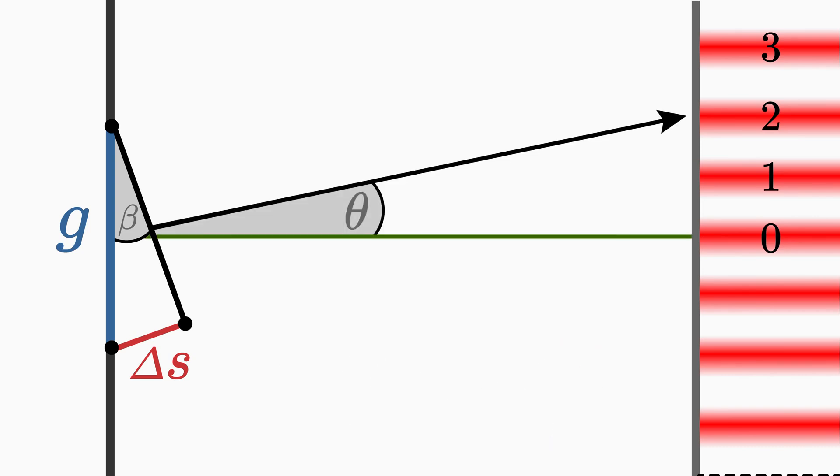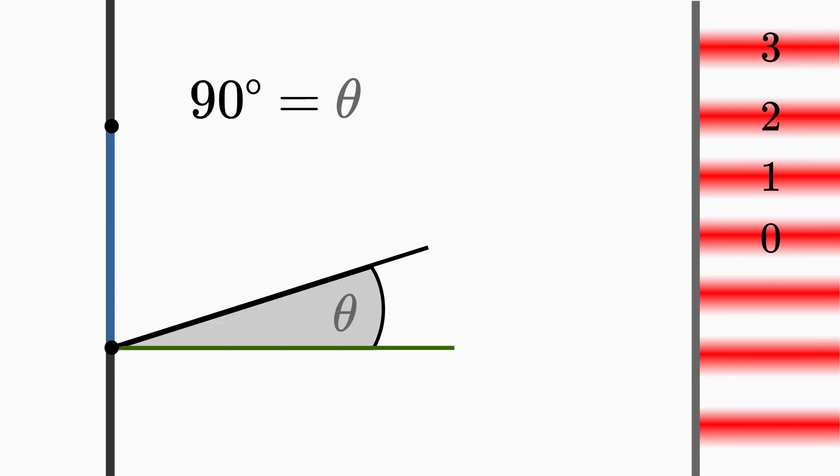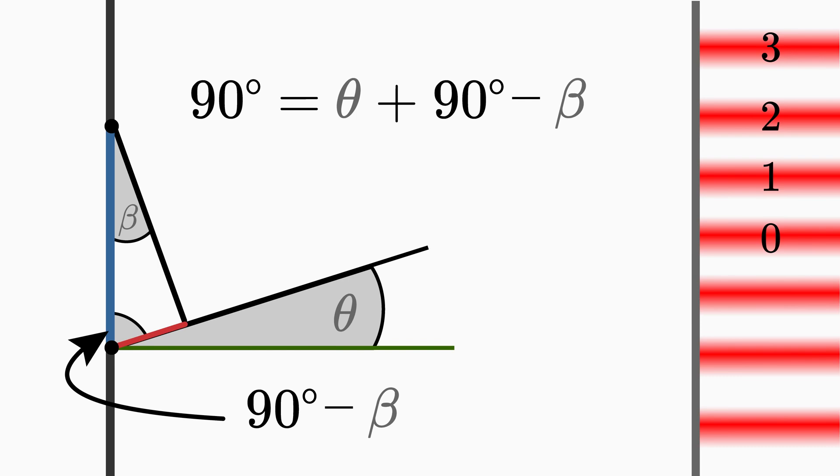By a simple geometrical consideration you can find out that the angles theta and beta are equal. Since the screen distance a is very large, this angle here is 90 degrees. And since the sum of angles in a triangle is 180 degrees, this angle must be 180 degrees minus 90 degrees minus beta. So the sum is 90 degrees minus beta. The angle between a and g is, as you can see, 90 degrees. These 90 degrees are composed of the angle theta and 90 degrees minus beta. From this follows theta is equal to beta.